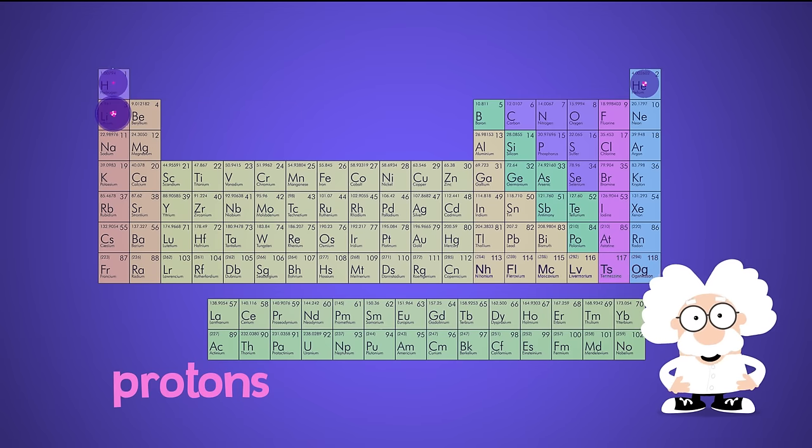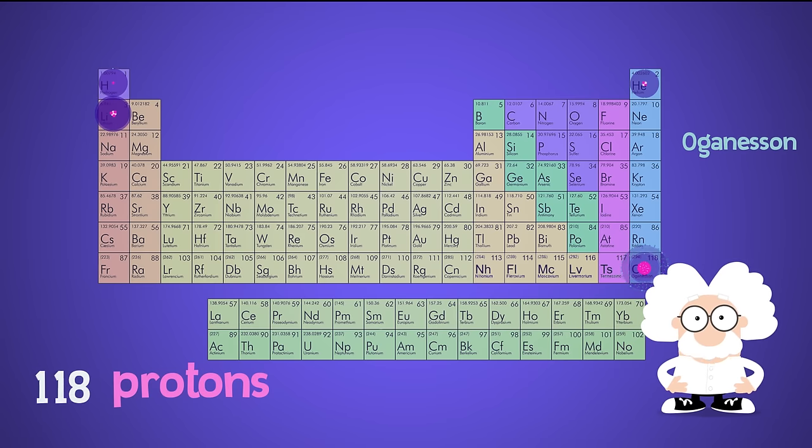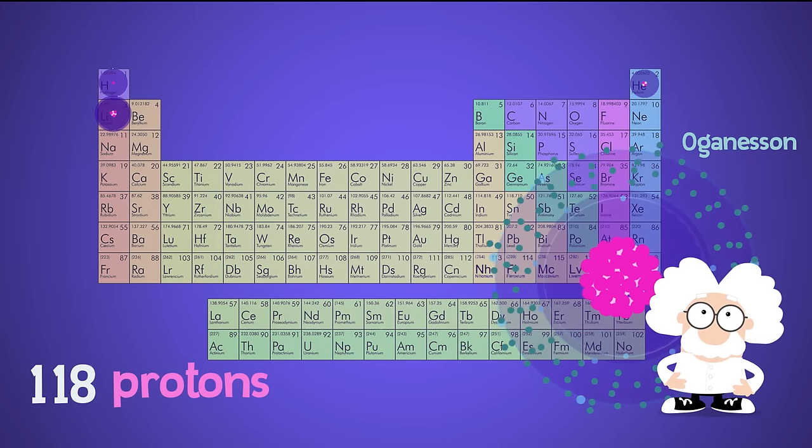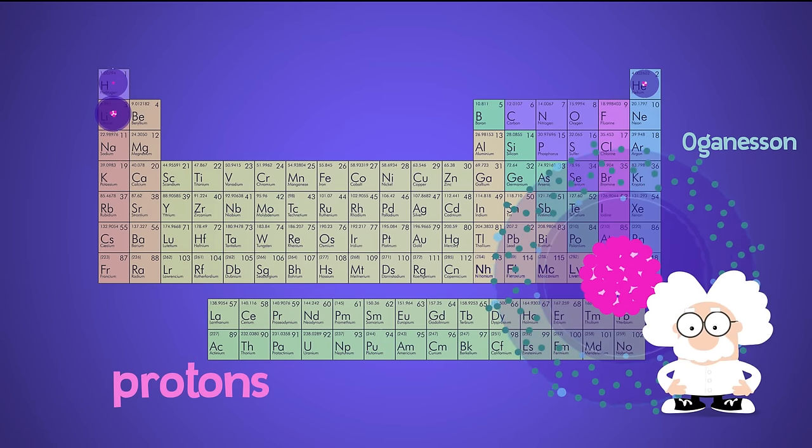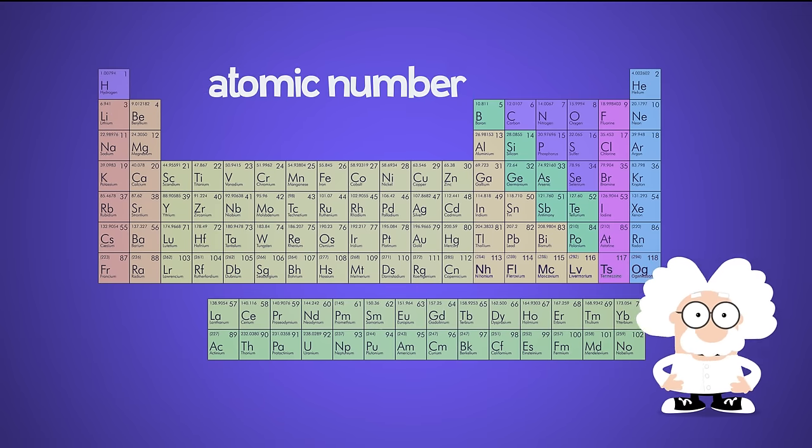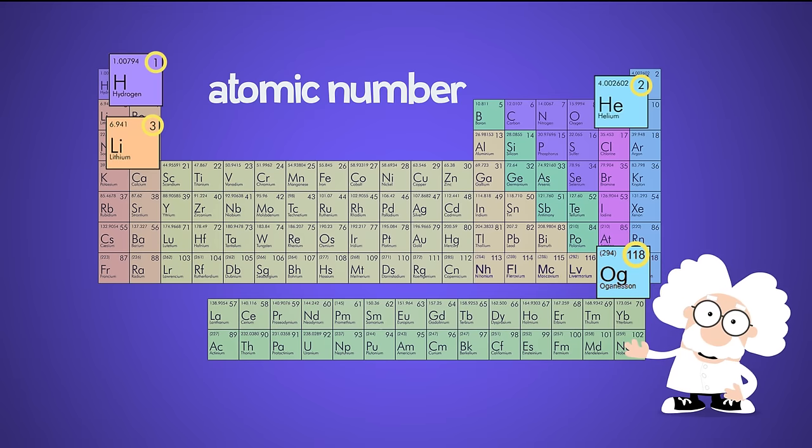This goes on all the way up to the hundred and eighteenth element, oganesson, which has, that's right, a hundred and eighteen protons in its nucleus. By the way, the number of protons in an atom is also called its atomic number, which you can see here on the periodic table of elements.